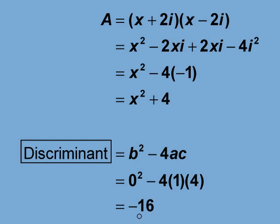As you can see, the discriminant is a negative number, which means that the quadratic has complex roots. And as we saw from the original factored form of the quadratic, these are the complex roots.